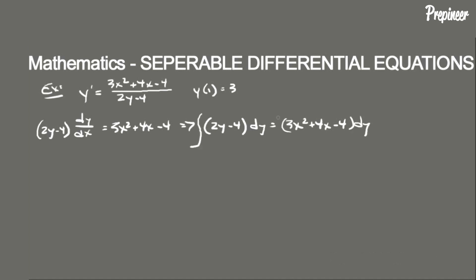Now we integrate both sides. The left side gives y squared minus 4y, and the right side gives x cubed plus 2x squared minus 4x plus C.